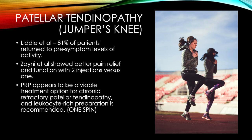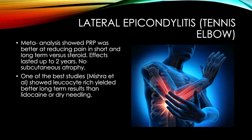For jumper's knee, two studies showed really good results. One by Liddle et al. showed 81% of patients returned to pre-symptom levels of activity, and another showed better pain relief and function with two injections versus one. Both used a leukocyte-rich preparation — meaning just one spin — and PRP does appear to be a viable treatment option for chronic jumper's knee, probably with more than one injection separated by three to six weeks.